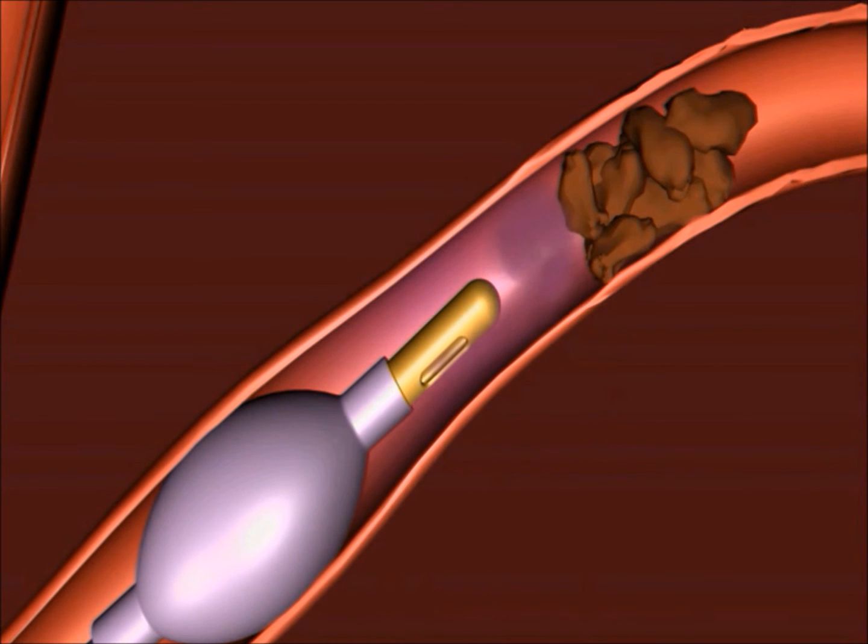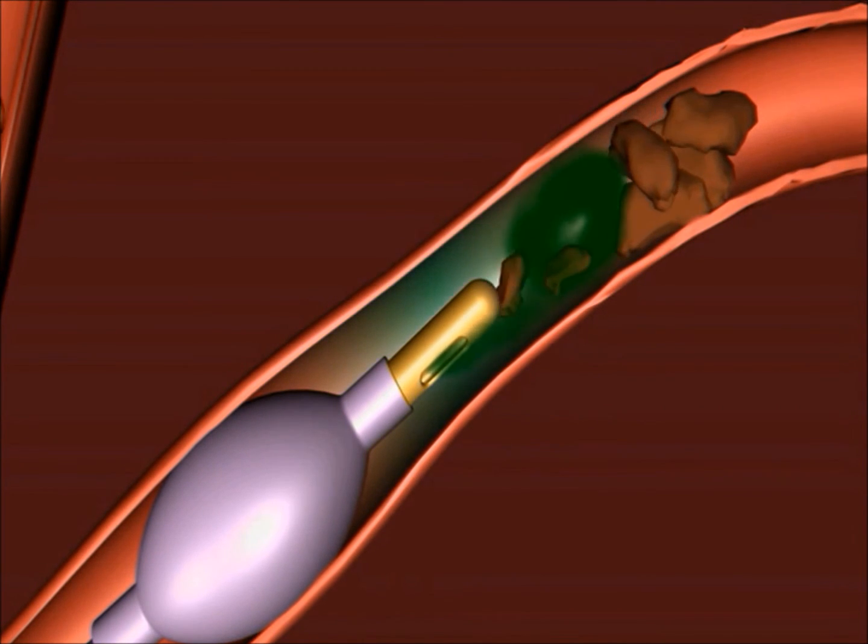A series of saline flushes with contrast dye are performed until the physician is confident that the sealed ischemic site has no more blood. This is followed by infusion of drug which is done simultaneously with aspiration using the guide wire lumen, creating a vacuum-like fluid flow.